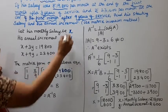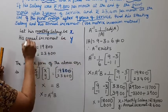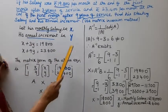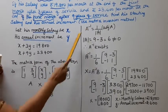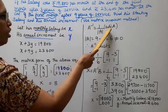X is the monthly salary, Y is the annual increment. Now we need to find A inverse. A inverse is 1 by determinant A times adjoint A.